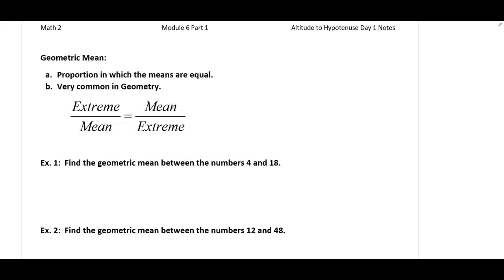Module 6, Part 1 is all about what we call the Altitude-Hypotenuse Theorem. Before we dive into the Altitude-Hypotenuse Theorem, the first thing we're going to talk about is something that's very common in math and actually helps out with the Altitude-Hypotenuse Theorem. It's called a geometric mean.